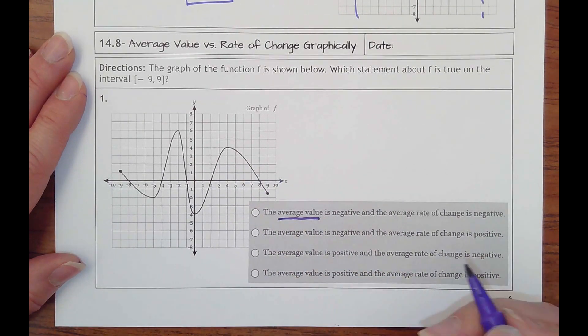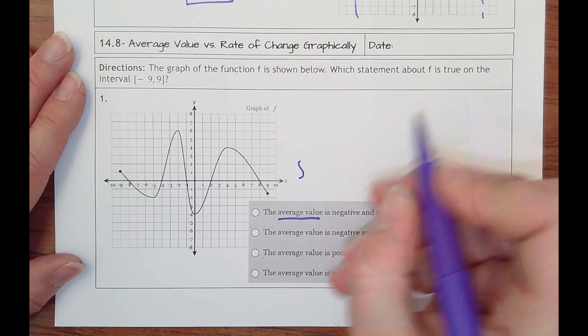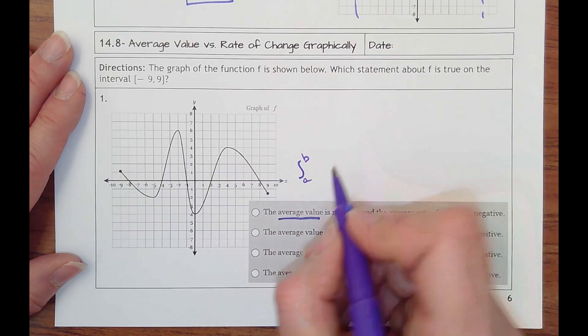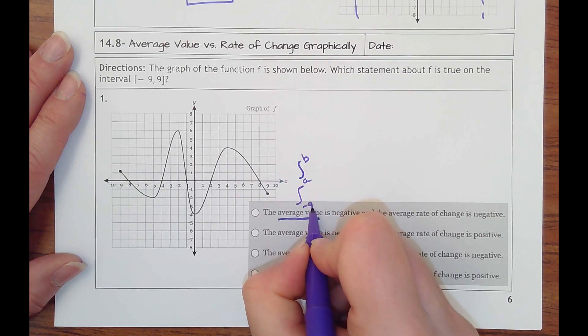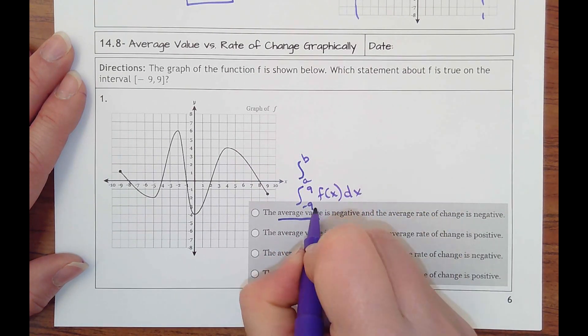Remember, average value is dealing with the integral. So it's saying that we're going from a to b, or in our case, we're going from negative 9 to 9 of the function with respect to x.